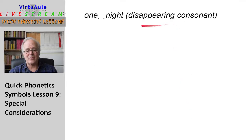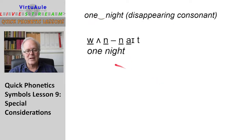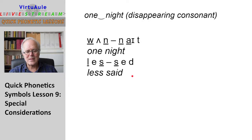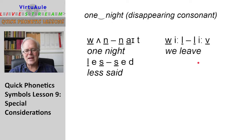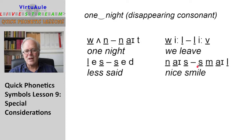Let's look at the disappearing consonant. You have 'one night' — listen — one night, so we produce only one N here, it's like one word: one night. Less said — one word — less said. We leave. Nice smile — nice smile — two words but only one sound. This should be 'we'll leave' — we'll leave — the future form.